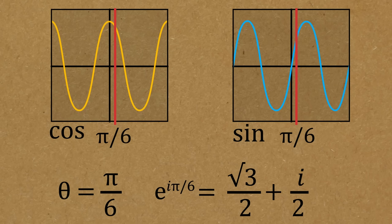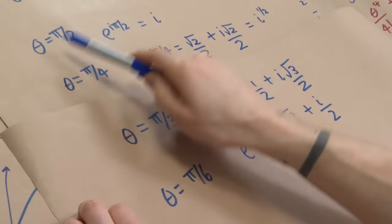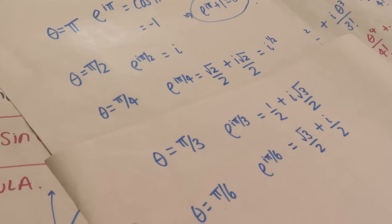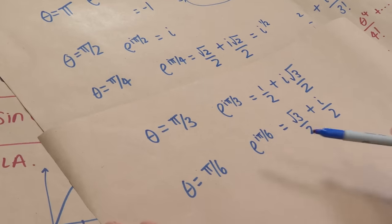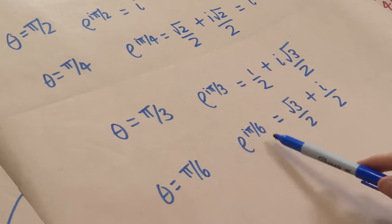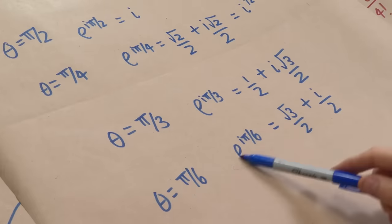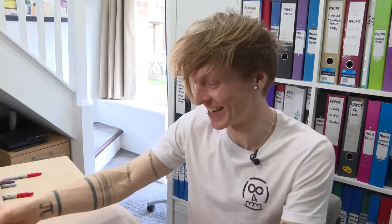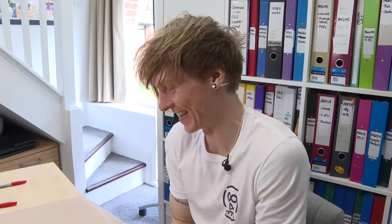For theta equals pi over 6 (30 degrees): e to the i·pi over 6 equals cos(30) plus i·sin(30) equals root-three over two plus i times one half. This brings in a 6 — a new number not seen in the other identities. So we get Euler's identity at pi, a definition of i at 90 degrees, the square root of i at 45 degrees, and these other identities at 60 and 30 degrees with all kinds of numbers — six, two, three, i, e — related together. The last one has been dubbed 'the sexy identity.'